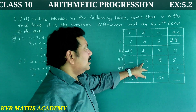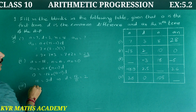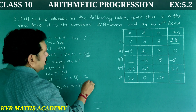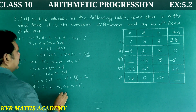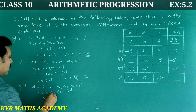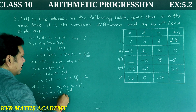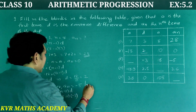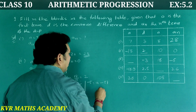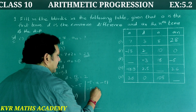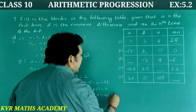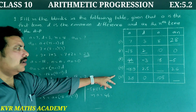Third one: D = −3, N = 18, A-N = −5, find A. Using A-N = A + (N − 1) × D: −5 = A + (18 − 1) × (−3) = A + 17 × (−3) = A − 51. So A = −5 + 51 = 46.